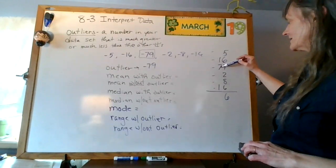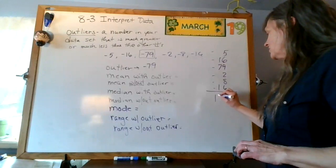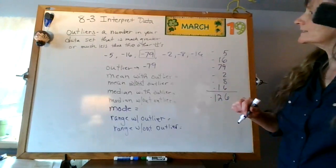3 plus 7 is 10, 11, 12. So my answer is 126, all right?